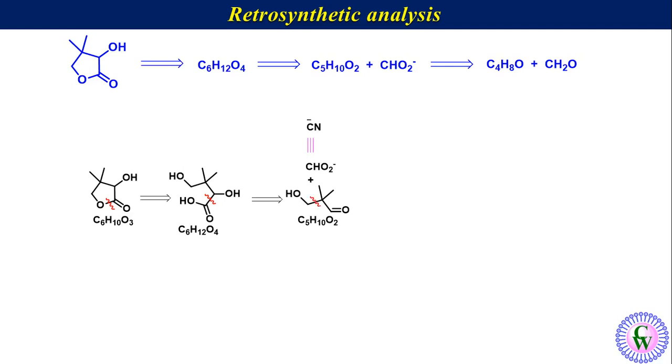suggests that 3-hydroxy-2,2-dimethylpropanal can be formed from isobutyraldehyde having molecular formula C4H8O and formaldehyde with the molecular formula CH2O via aldol condensation.